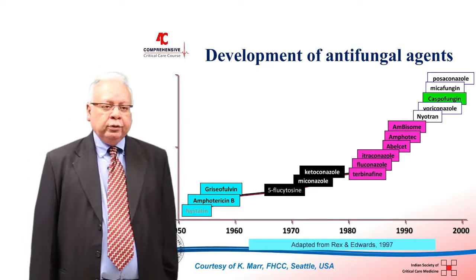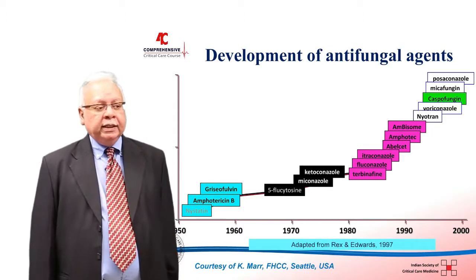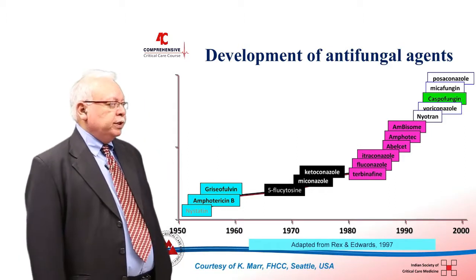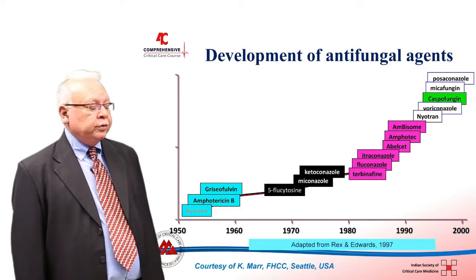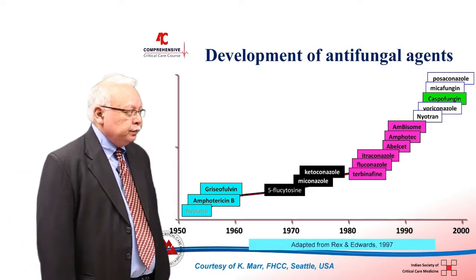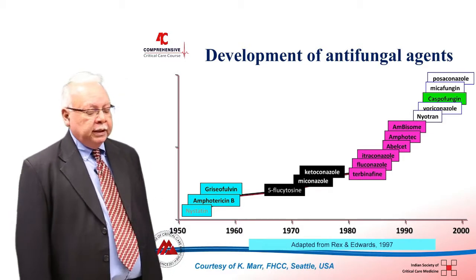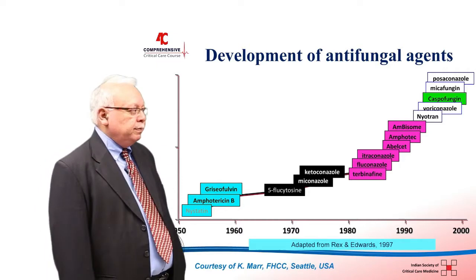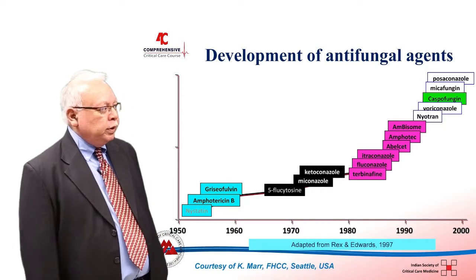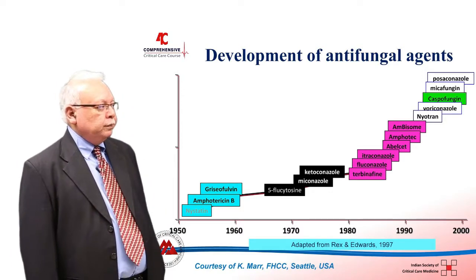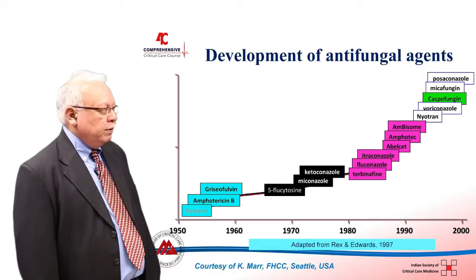We were lucky to have a plethora of antifungal agents which have developed over years. The story started in the 1960s with the development of amphotericin B. In the 1970s, ketoconazole and 5-fluorocytosine were developed. In the 1980s came the era of fluconazole and itraconazole. In the 1990s, liposomal amphotericin B came to market. In the 2000s, voriconazole and newer azoles like isavuconazole, and different echinocandins like caspofungin, micafungin, and anidulafungin came into the market.